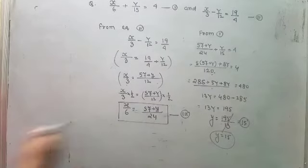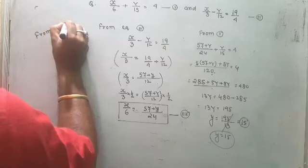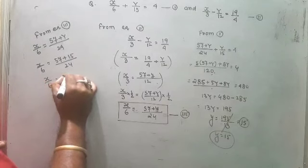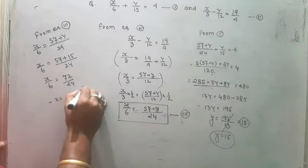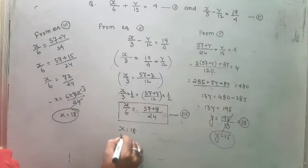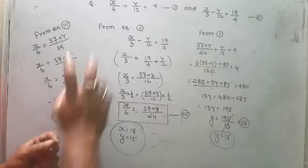Now putting the value of y in equation three to find x. From equation three: x by 6 is equal to 57 plus y by 24. Substituting y equals 15: x by 6 equals 57 plus 15 by 24, which is 72 by 24. So x equals 6 times 72 by 24, which is 6 times 3, giving x equal to 18. Therefore x is equal to 18 and y is equal to 15.